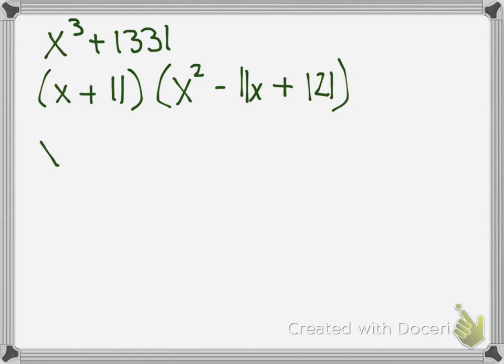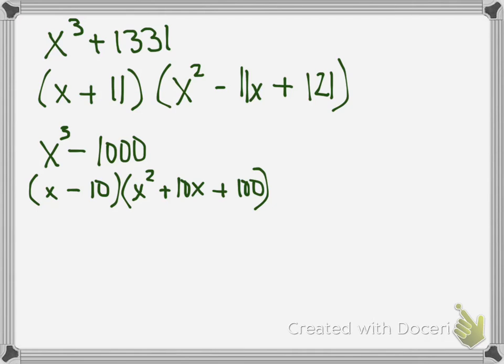Let's look at the next one. Now I've got x cubed minus 1,000. The minus is minus, plus, plus. The cube root of x is just x, and the cube root of 1,000 is 10. So now I'm going to square x squared. 10 squared is 100. And then 10 times x in the middle. There you go.